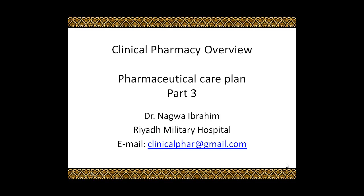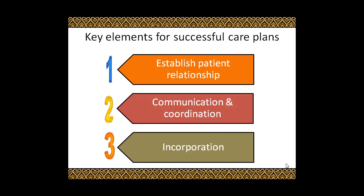Clinical pharmacy overview: pharmaceutical care plan, part 3. During this video, I'm going to talk about key elements for successful care plans. First, you have to establish a relationship with patients. A relationship or partnership is established with the patient to ensure ongoing active patient involvement. Second, communication and coordination: you have to ensure effective ongoing communication and coordination of the plan.